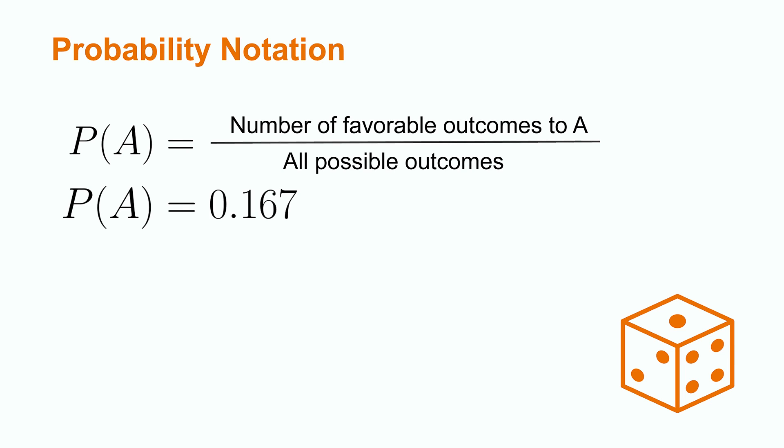When we want to describe the probability of anything except a certain event happening, we can use the complement rule. The complement rule is written P of A superscript C equals 1 minus the probability of event A, where A superscript C is A complement.